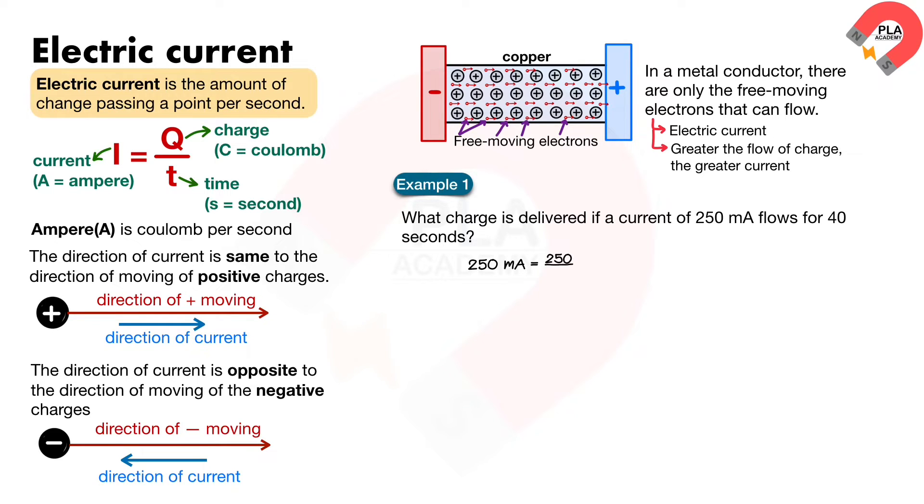Convert 250 mA to amperes by dividing 1000. From the equation I equals Q over T, we rearrange the equation as Q equals I times T. Substitute I equals 0.25 and T equals 40. Q equals 10 coulombs.